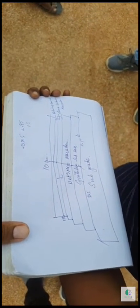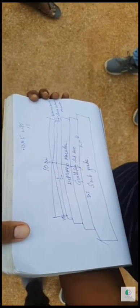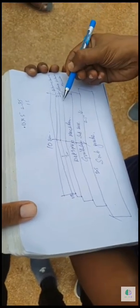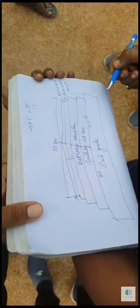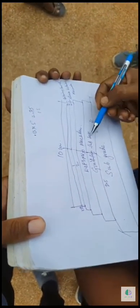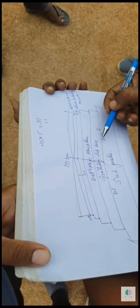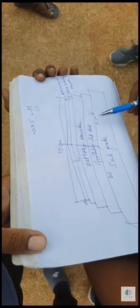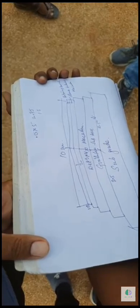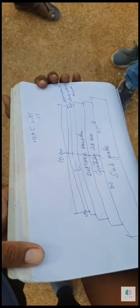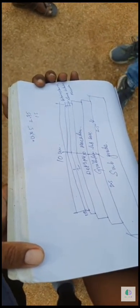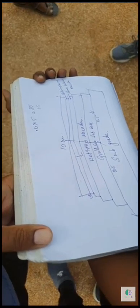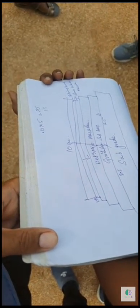That is what we need — that is the quality. Otherwise, if you compromise on the thickness or the slope, both things are compulsory. If you do not maintain the slope, the road will get damaged within three to four years. You have to keep that in mind.